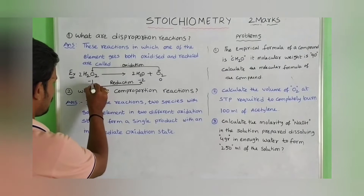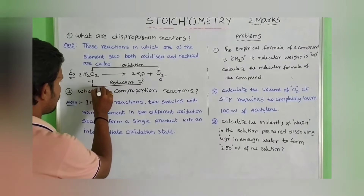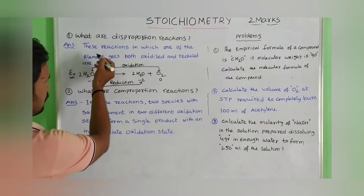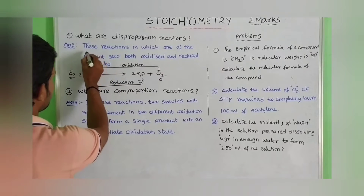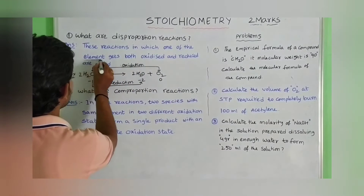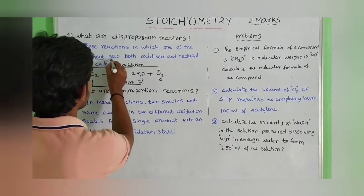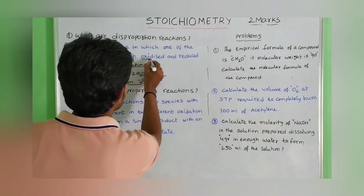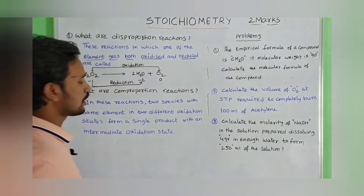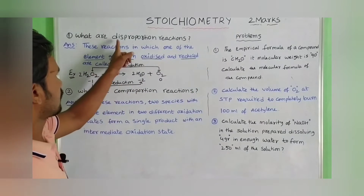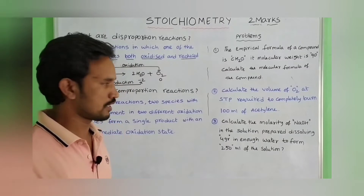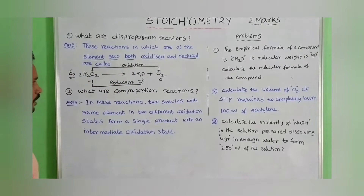Both oxidation and reduction occur. These reactions, in which one element gets both oxidized and reduced, are called disproportionate reactions.